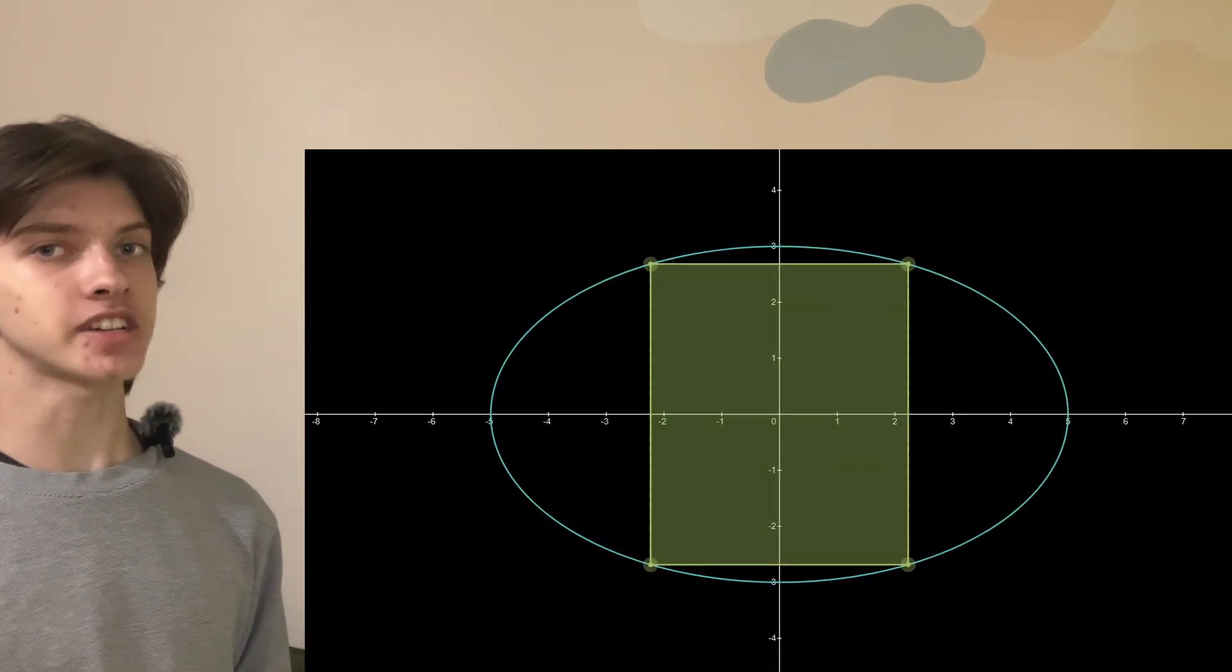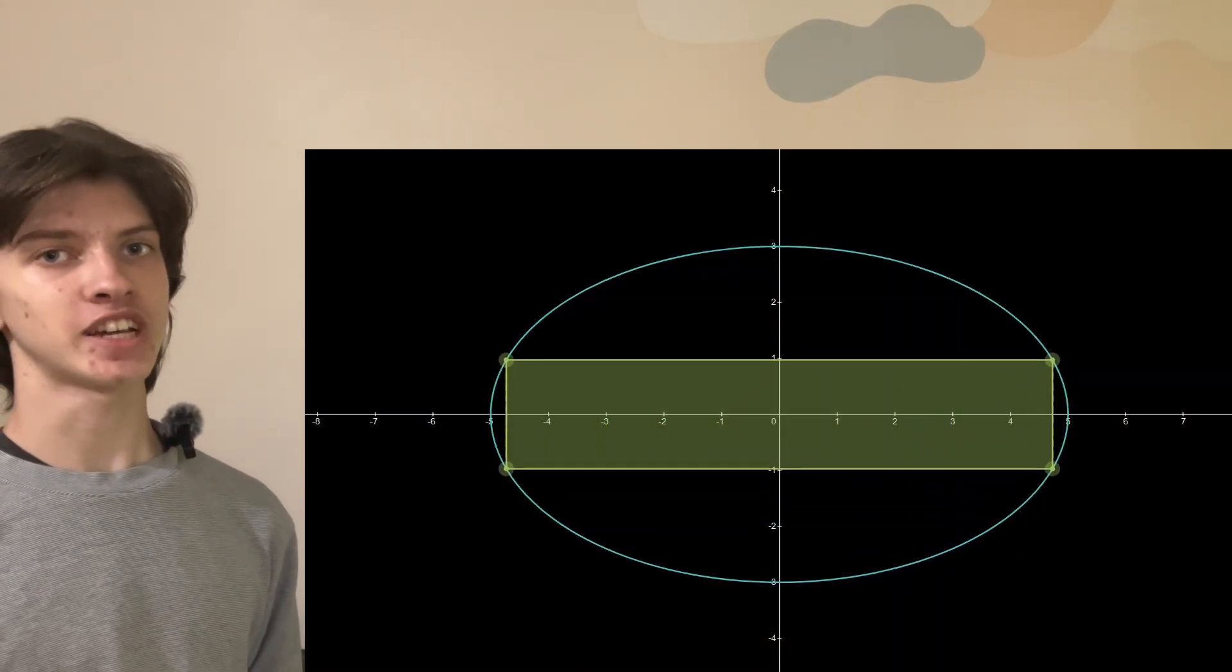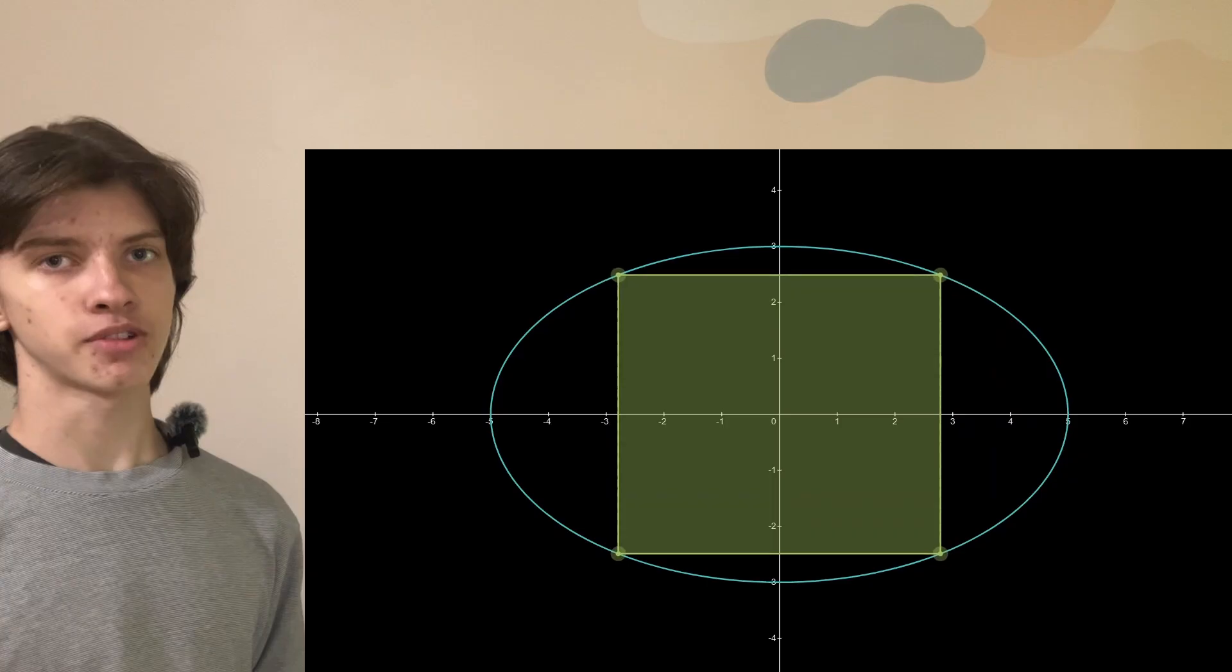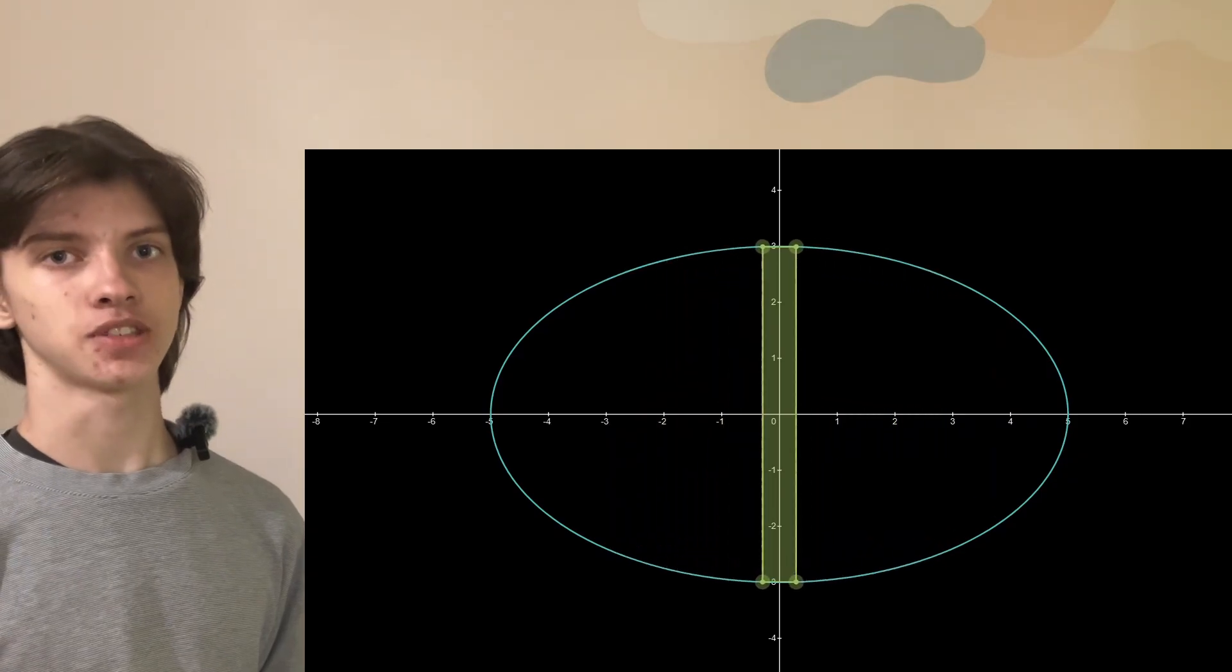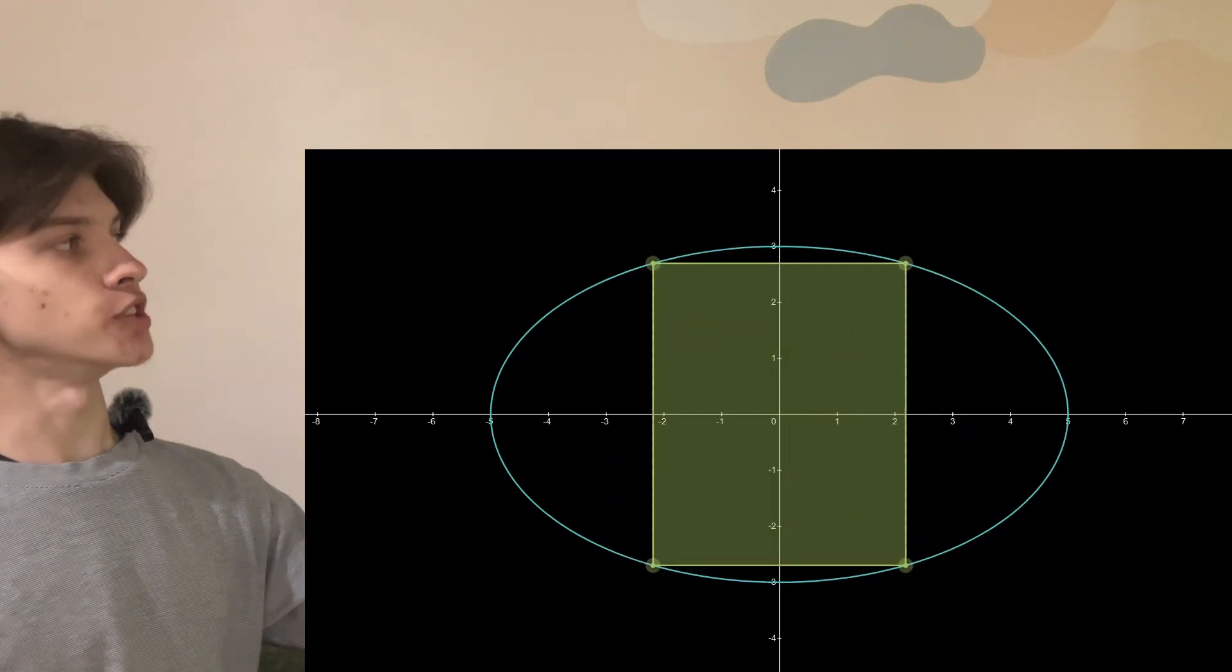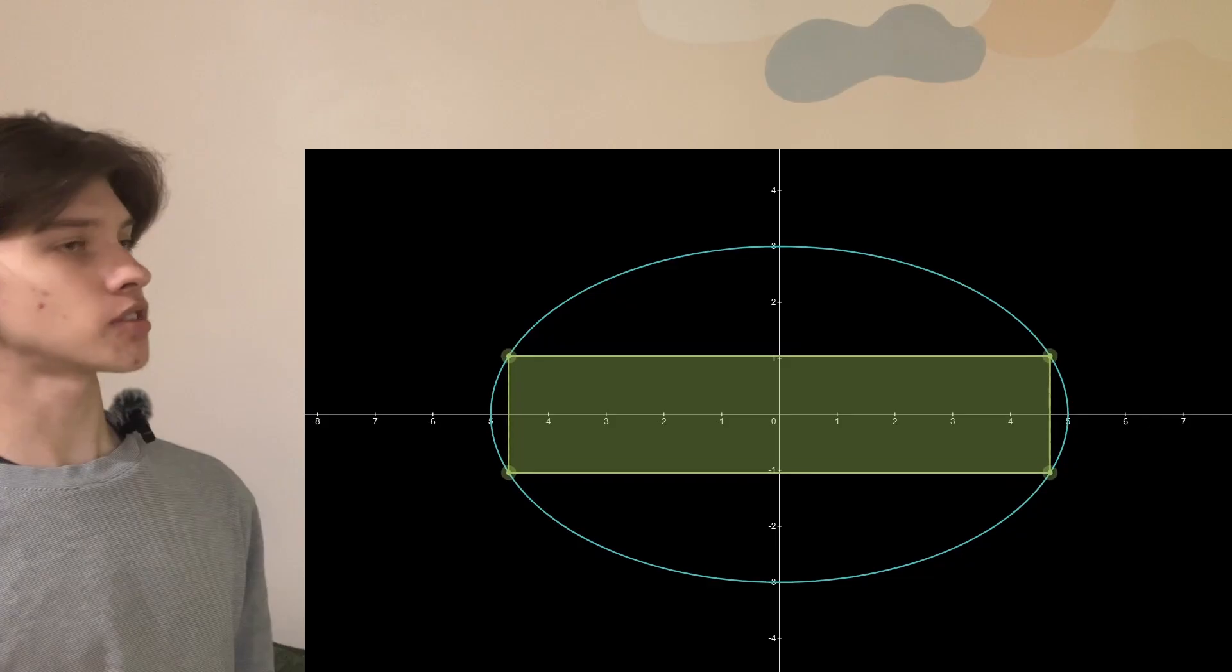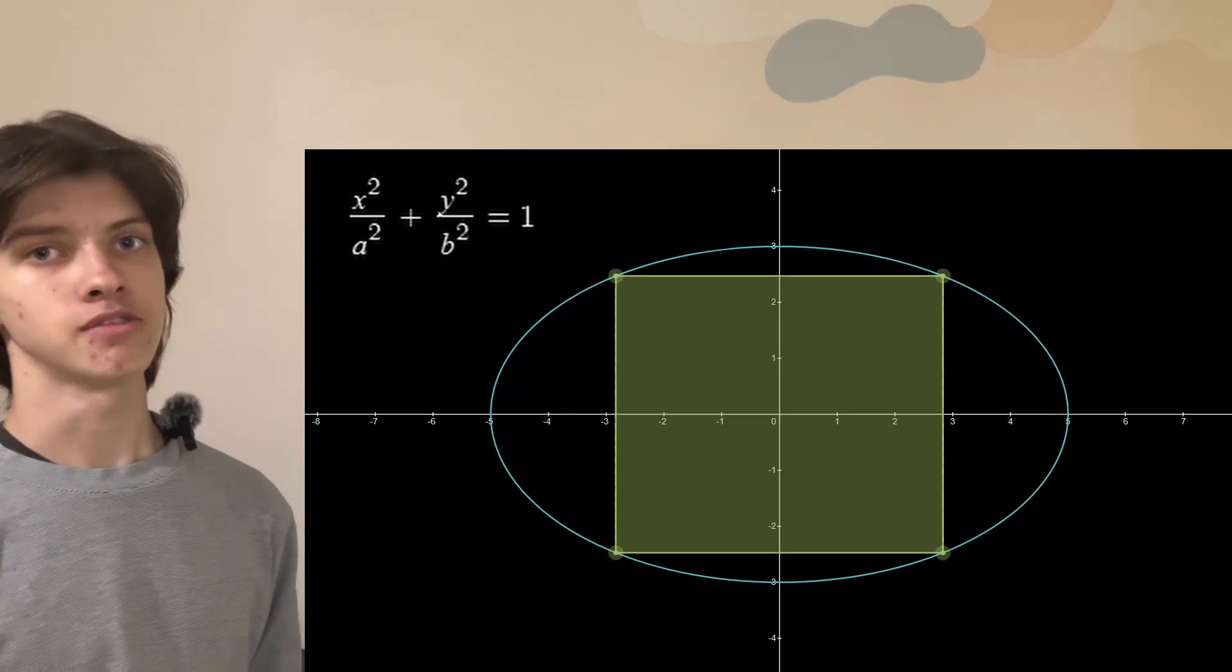Welcome everyone! Today we're going to solve a fun optimization problem. We're asked to determine the dimensions of the largest rectangle by area that can be inscribed in a general ellipse, with the sides of the rectangle being parallel to the axis of the ellipse. Here's a small visual guide on screen and also a reminder for the equation of an ellipse if you need it.